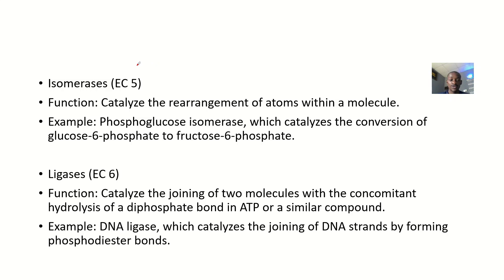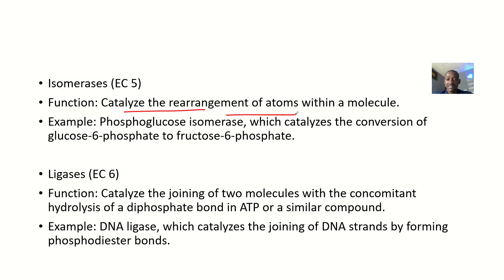The next one is enzyme classification 5 — isomerase. This class catalyzes isomerization: it's a rearrangement. The same thing, but rearranged in a different way. So they catalyze the rearrangement of atoms within a molecule. An example is phosphoglucose isomerase, which catalyzes the conversion of glucose-6-phosphate and fructose-6-phosphate.